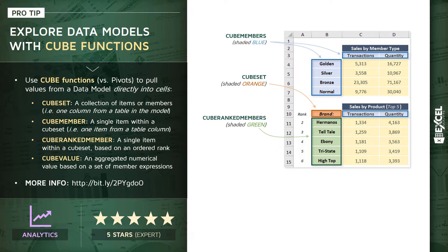Last but not least, we have the fourth primary type: the CubeValue, shown in yellow. These are the actual numerical values that we're aggregating based on a set of member expressions, and those member expressions help us filter down the values to retrieve the proper numbers.